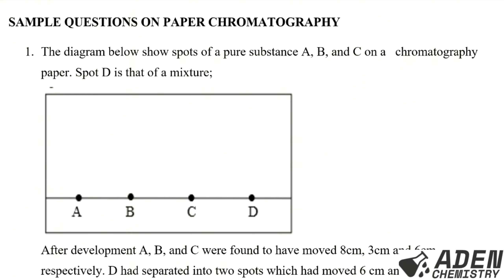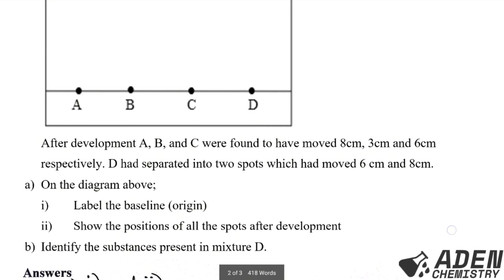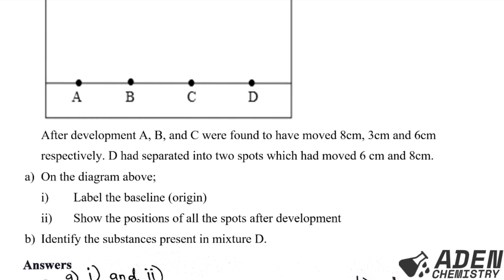Now we go to sample questions on paper chromatography. Question one: the diagram shows spots for pure substances A, B, and C on a chromatography paper. Spot D is that of a mixture. After development, A, B, and C were found to have moved 8 cm, 3 cm, and 6 cm respectively. D had separated into two spots which had moved 6 cm and 8 cm.